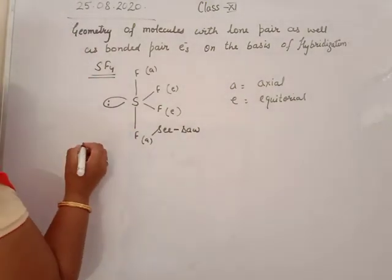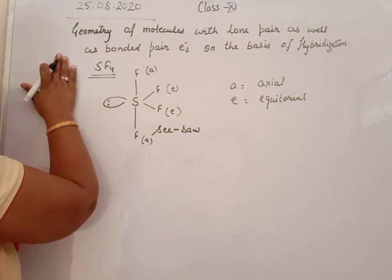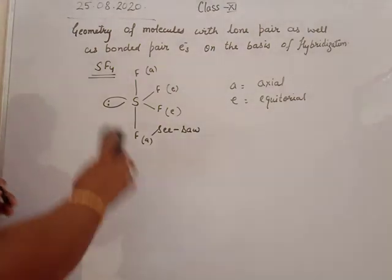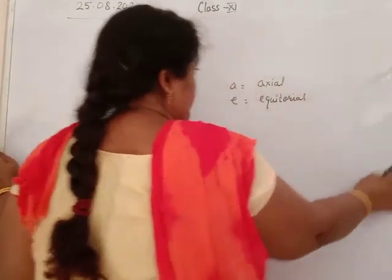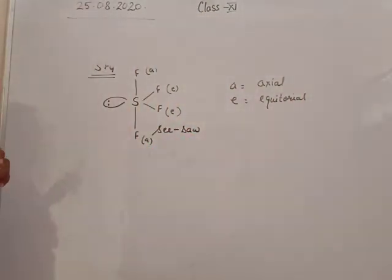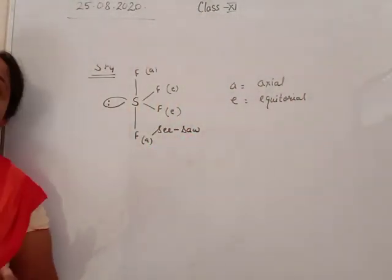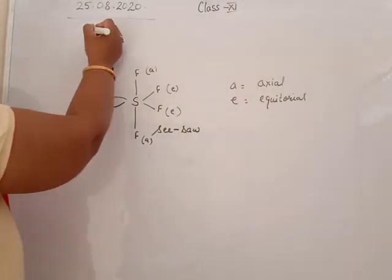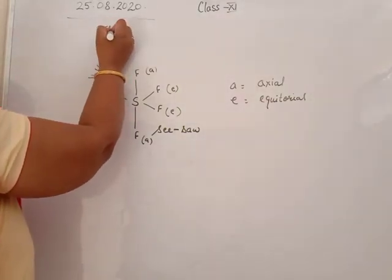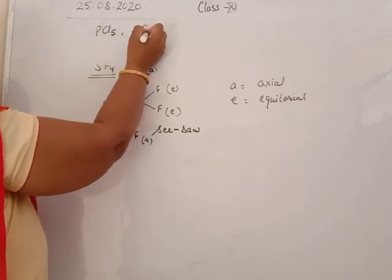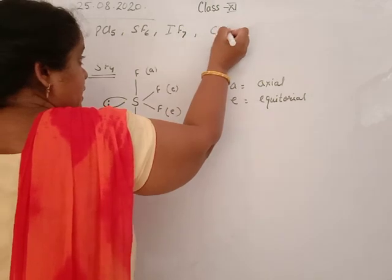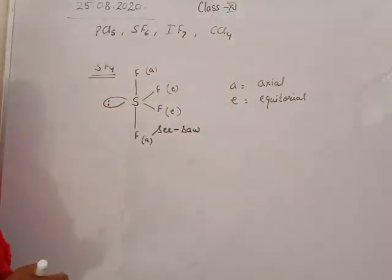Now I give you more molecules to calculate the geometry — whether there are lone pairs or not, you identify yourself: PCl5, SF6, IF7, CCl4. If hybridization is not clear, you can contact me to understand the concept, but calculate hybridization yourself. Practice yourself. Thank you.